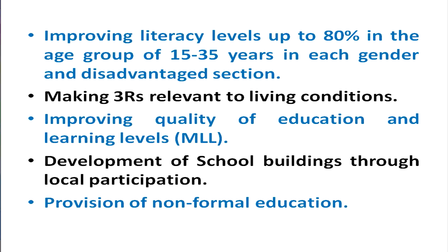Disabled children belonging to minority communities were the special focus of this Lok Jumbesh project. The fourth objective was improving the literacy levels up to 80 percent in the age group of 15 to 35 years in each gender and the disadvantaged sections of society. This project focused on improving the literacy rate of Rajasthan, which was very low at the time the project was launched, for both women and men and for population belonging to different categories.